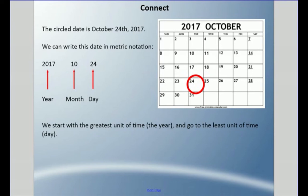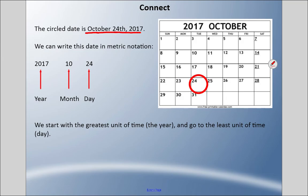Let's get started. I have a calendar here of October 2017 and the circled date is October 24th, 2017. The way I've written it up here — maybe your teacher writes that way on the board at the front of the classroom — we get to see the full way the month is spelled, with ordinal numbers like 'th' after the 24th, and comma 2017.